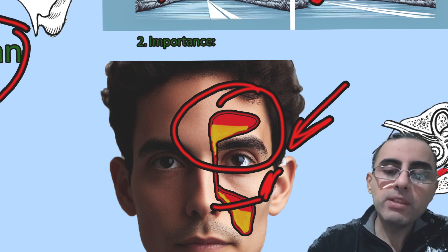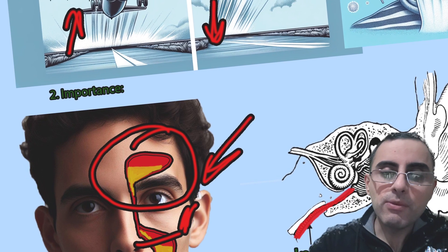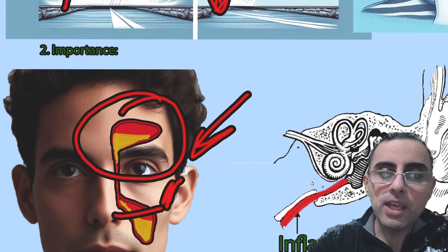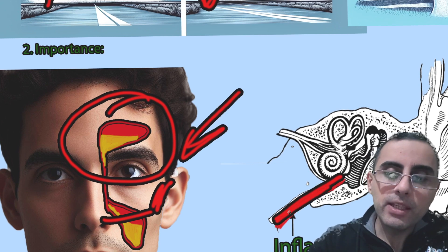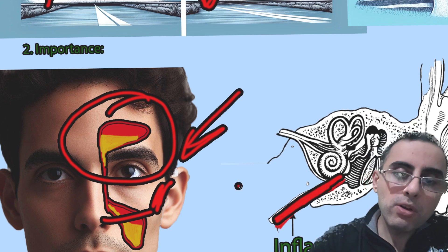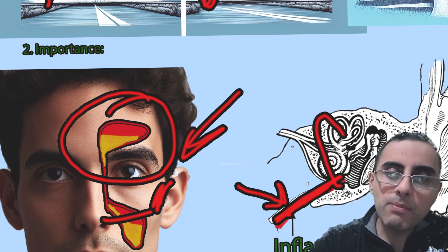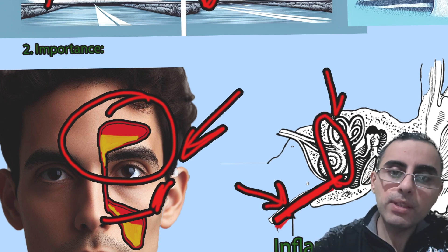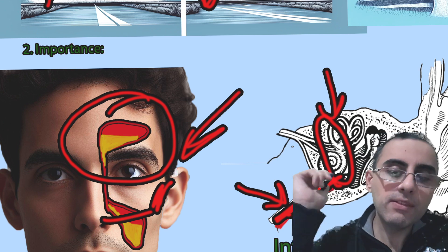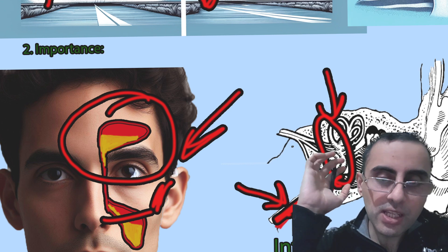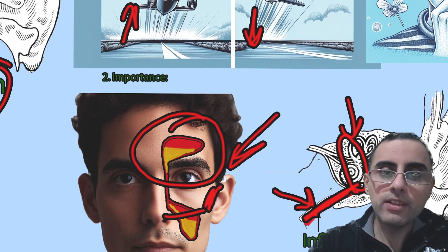What is the mechanism? The main mechanism is that we have inflammation and infection of the Eustachian tube, which causes a blockage of airflow. This increases pressure inside the middle ear, causing pressure sensitivity — a pressure sensation and a feeling of fullness in the ear.